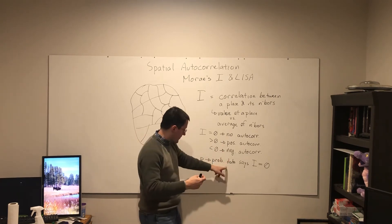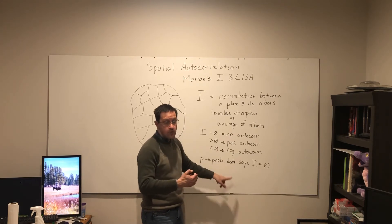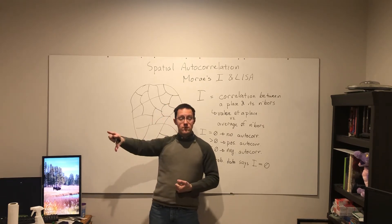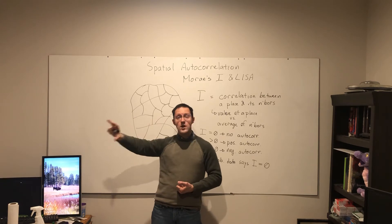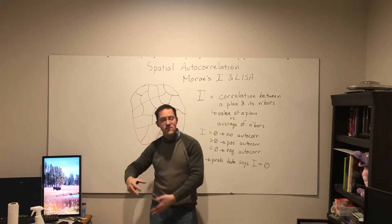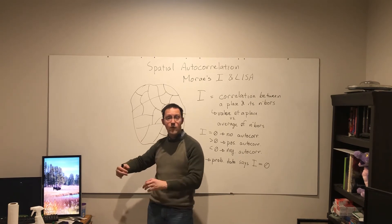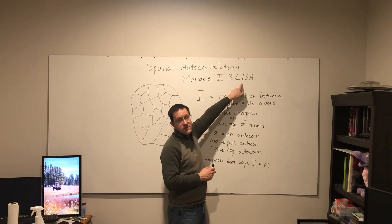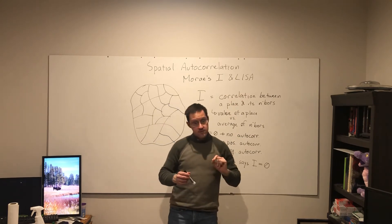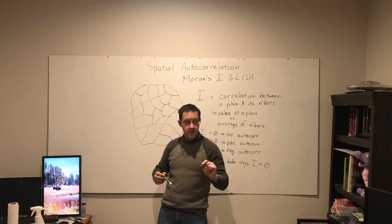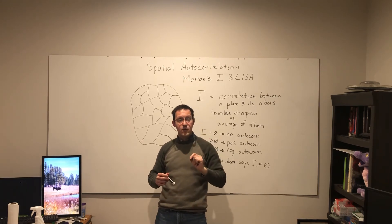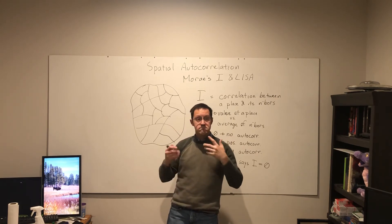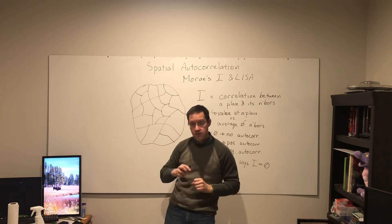If all you have is the I value and its associated p-value, you don't know where to send help. You don't know where there are high values next to other high values. You don't know where to go to find positive lessons or mitigation strategies — where there are low values next to other low values. That is why we have LISA as well: the local indicator, to say where in my study area do I find the clusters of high values, where do I find the clusters of low values. If you need to know where high versus low values are located, that's where LISA comes in.